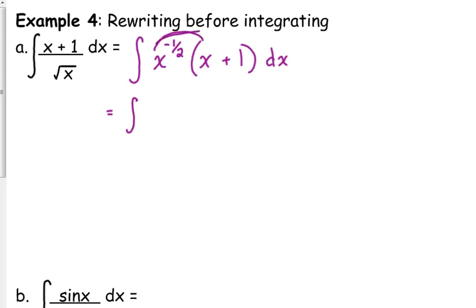I'm going to distribute this x to the negative one-half inside the parentheses. When you multiply, you add exponents, so that's x to the positive one-half when you multiply it by x. And when you multiply it by one, it is, of course, itself.